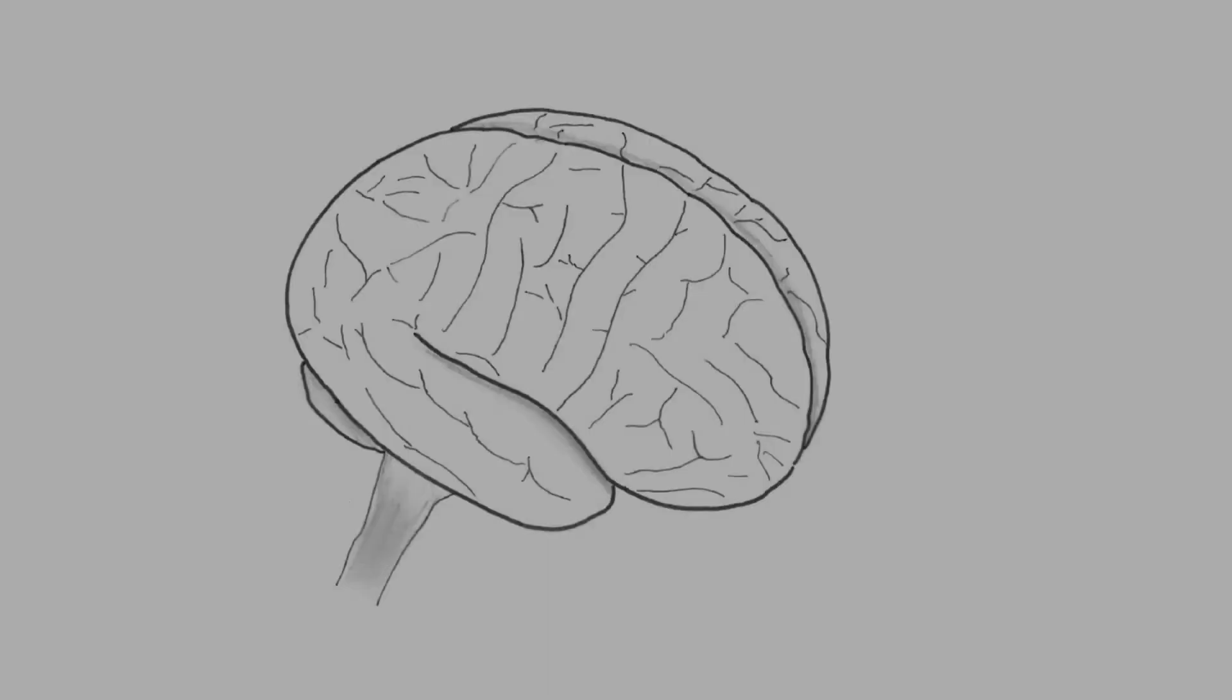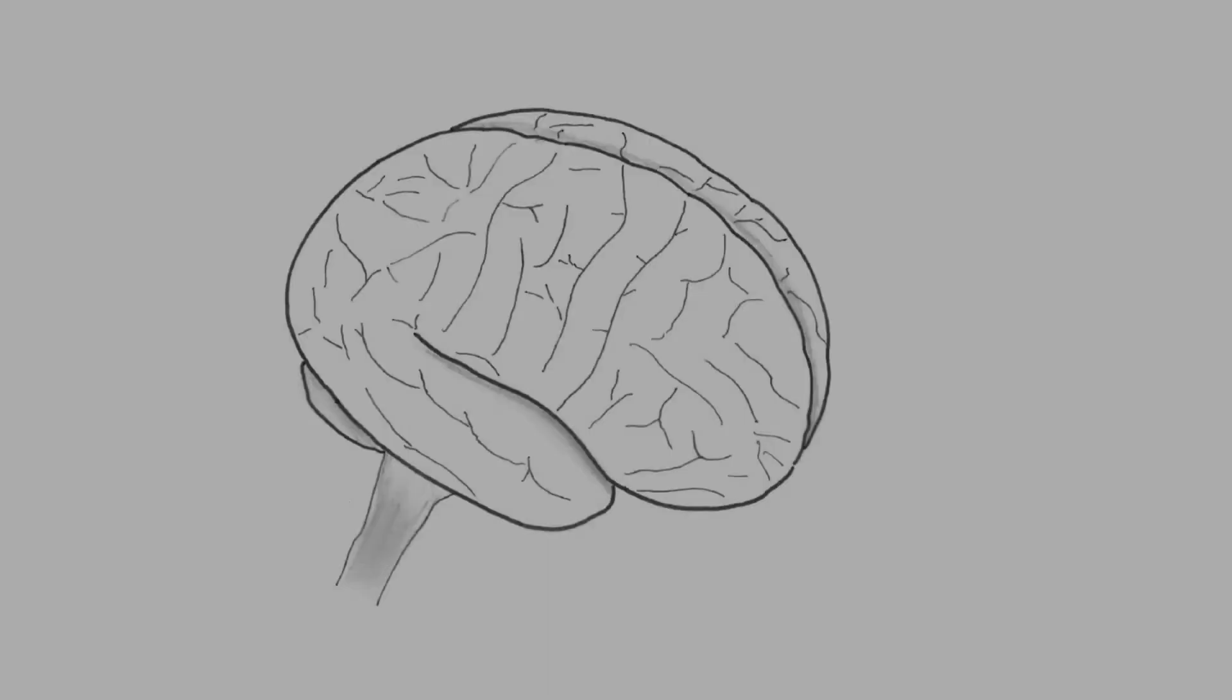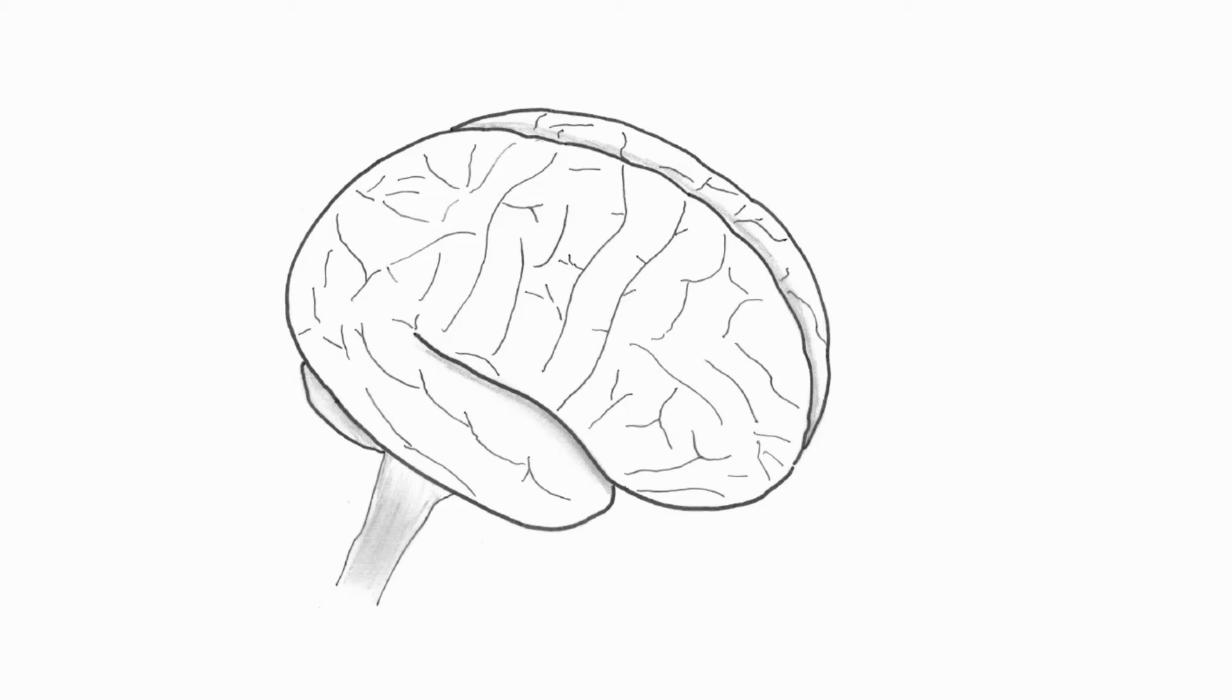Underneath the cortex, there's a range of structures which are just as important as the cortex for learning. These subcortical structures are difficult to see from the outside of the brain. We will have to imagine the rest of the brain is transparent in order to see them.